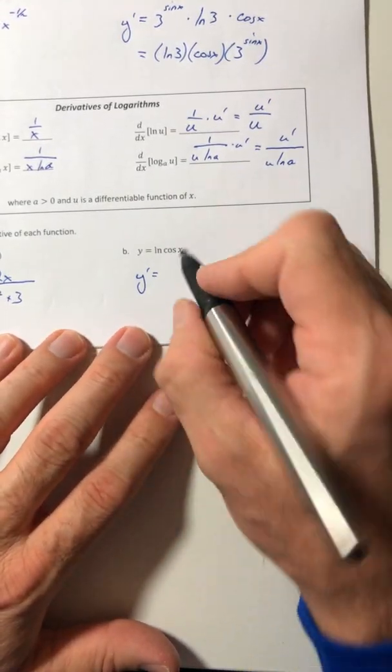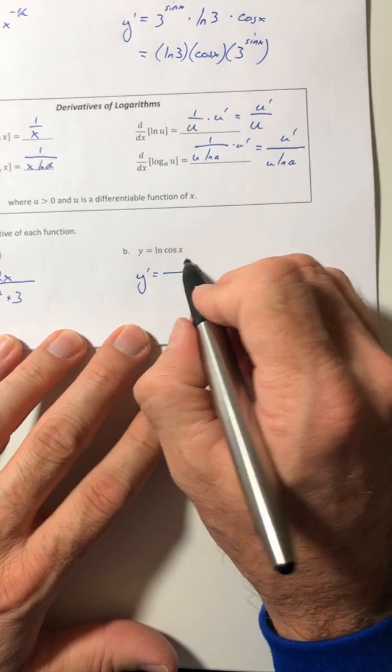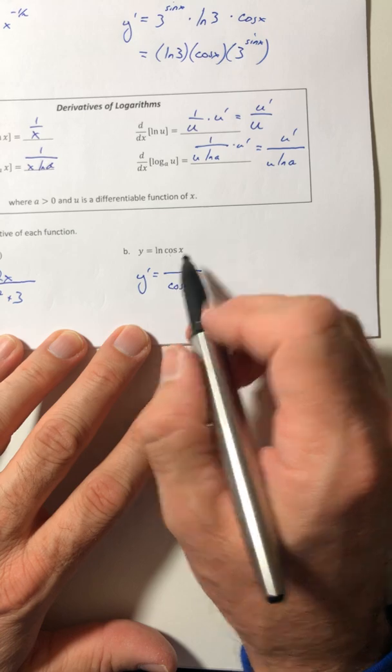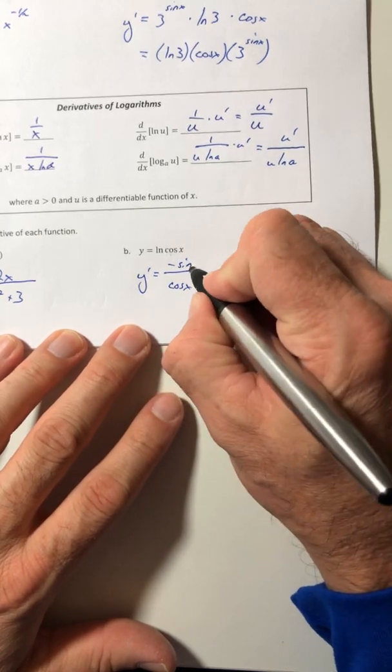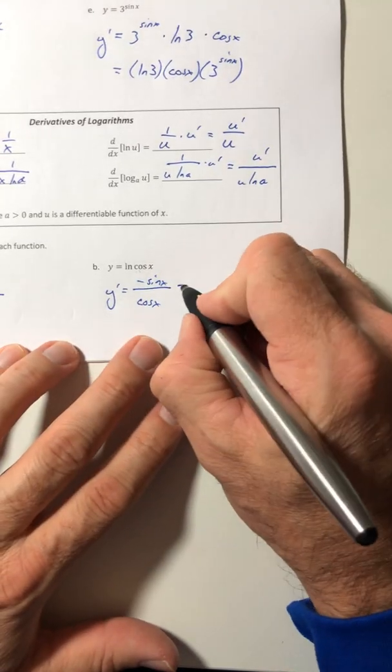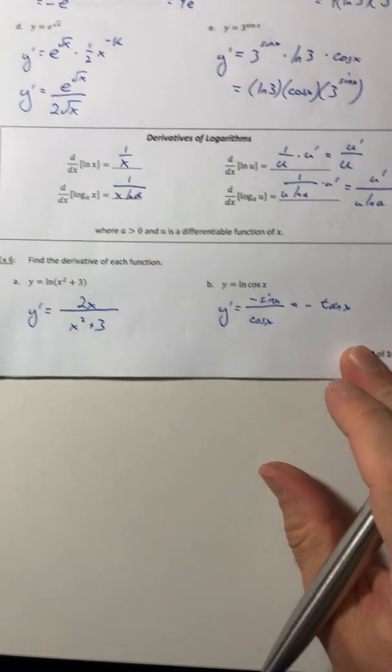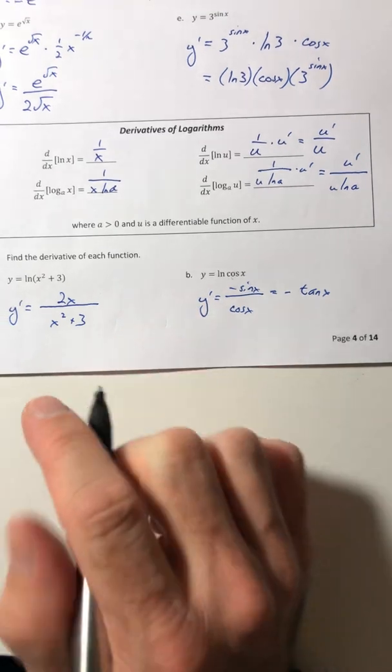Okay, so ln of cosine. The cosine goes in the denominator. The derivative of cosine goes on top, and I can simplify that into negative tangent. So ln's are not usually too bad.